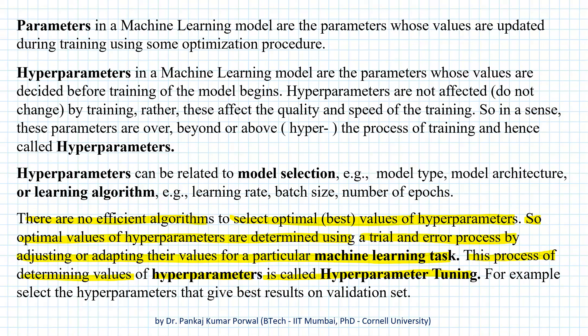And in the case of hyperparameter tuning, one of the ways is to train several models with different values of hyperparameters and select the hyperparameters that give us the best result on the validation set — that is, they give minimum error for the validation set.